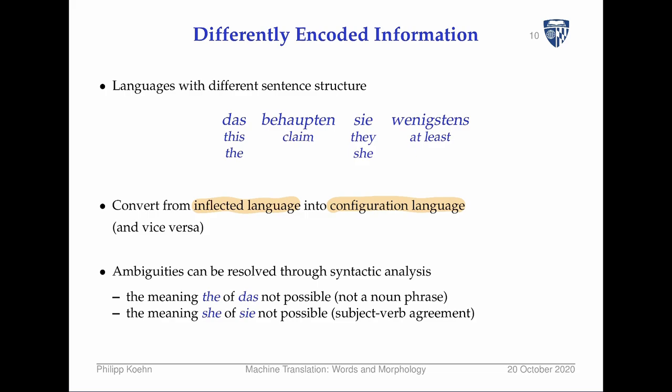Here's a very short and ambiguous German sentence: 'Dies behaupten wenigstens.' The word 'das' could mean 'this' or 'the', 'behaupten' means 'claim' as a verb, and 'sie' means 'they' or 'she'. It's super ambiguous. However, from the morphology alone you can see this is a plural verb, so there's only one subject that fits — a native German speaker resolves this completely intuitively.